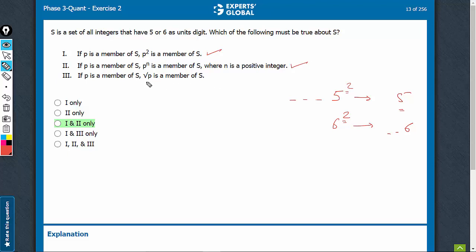Nothing can be said about square root P because, of course, there are numbers which end with a 5 and are not perfect squares. For example, 5 itself, root 5 is not going to be a member of the set, whereas 5 is a member of the set and root 6, similarly, 6 is a member of the set, but root 6 will not be a member of the set.